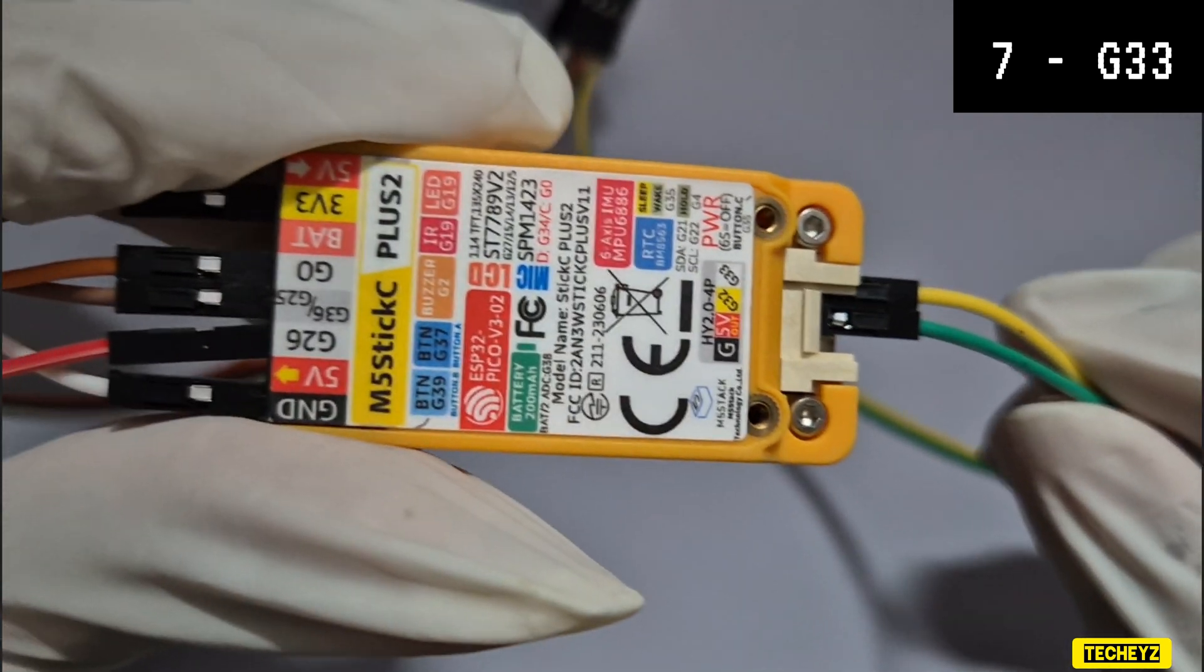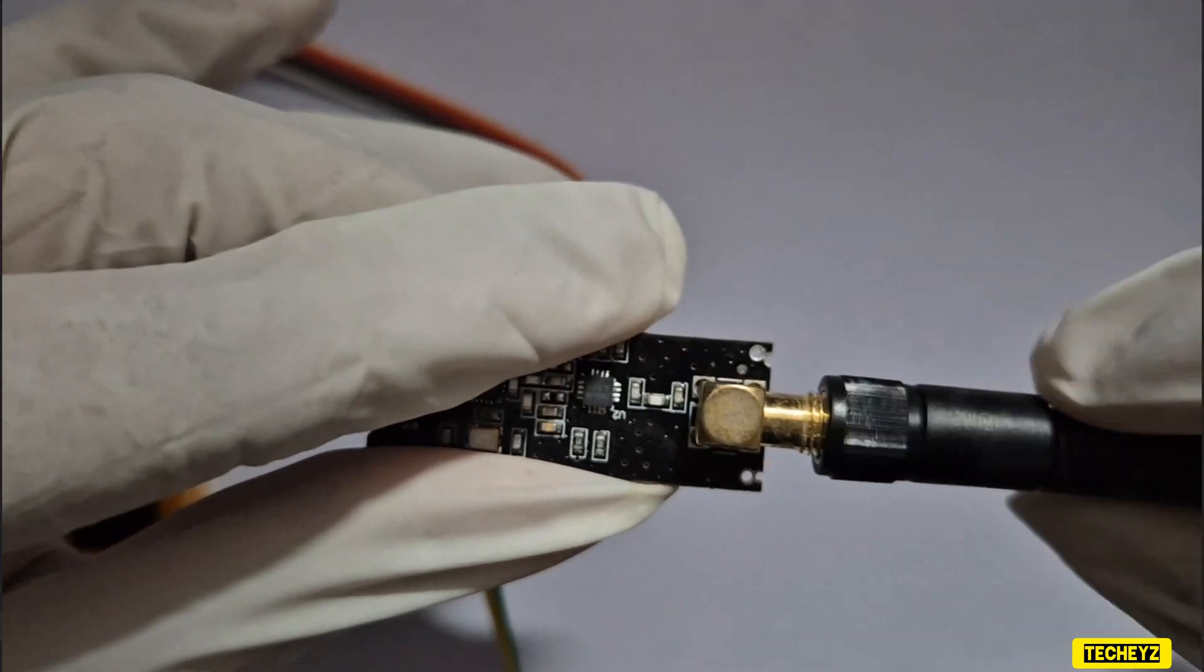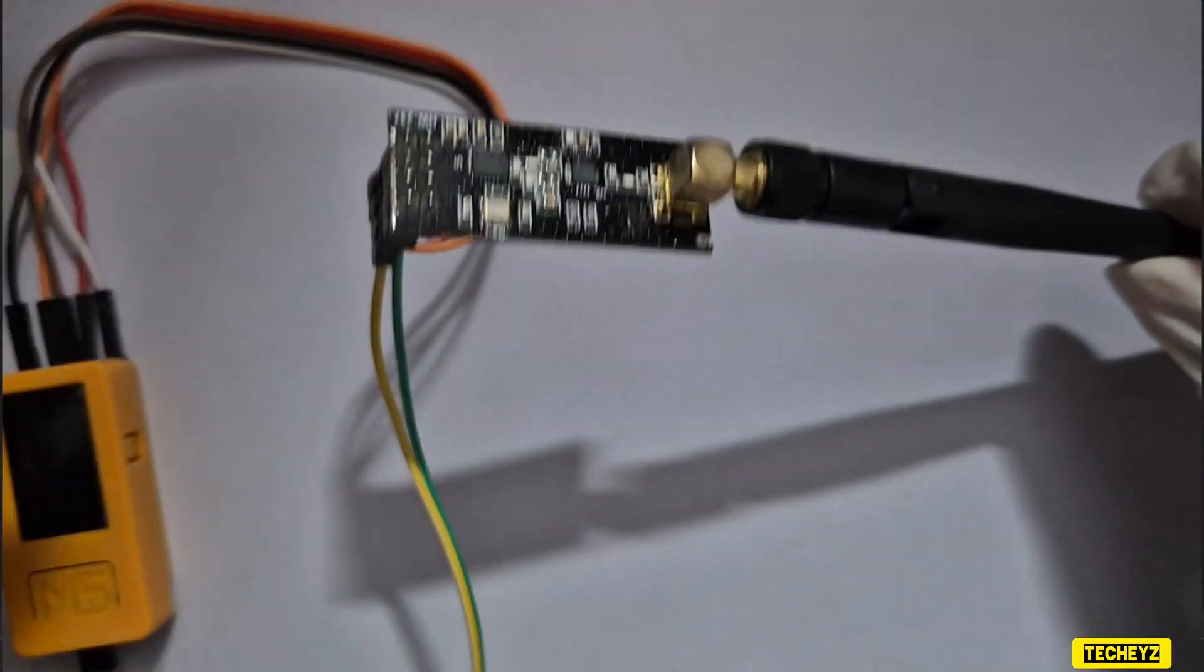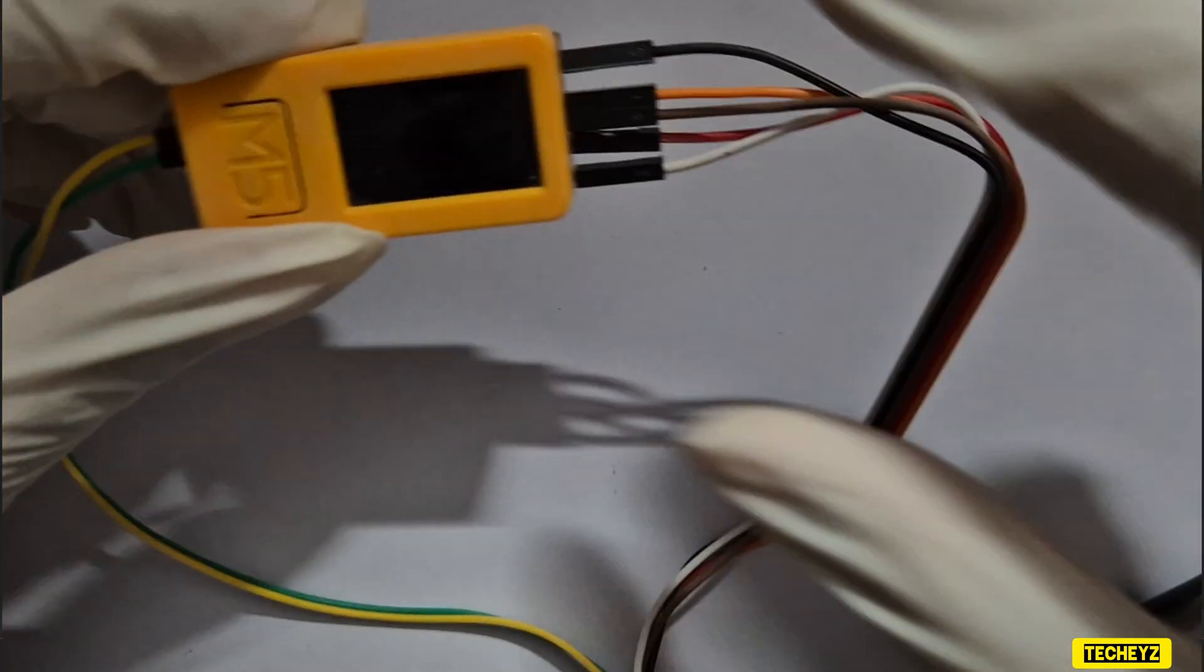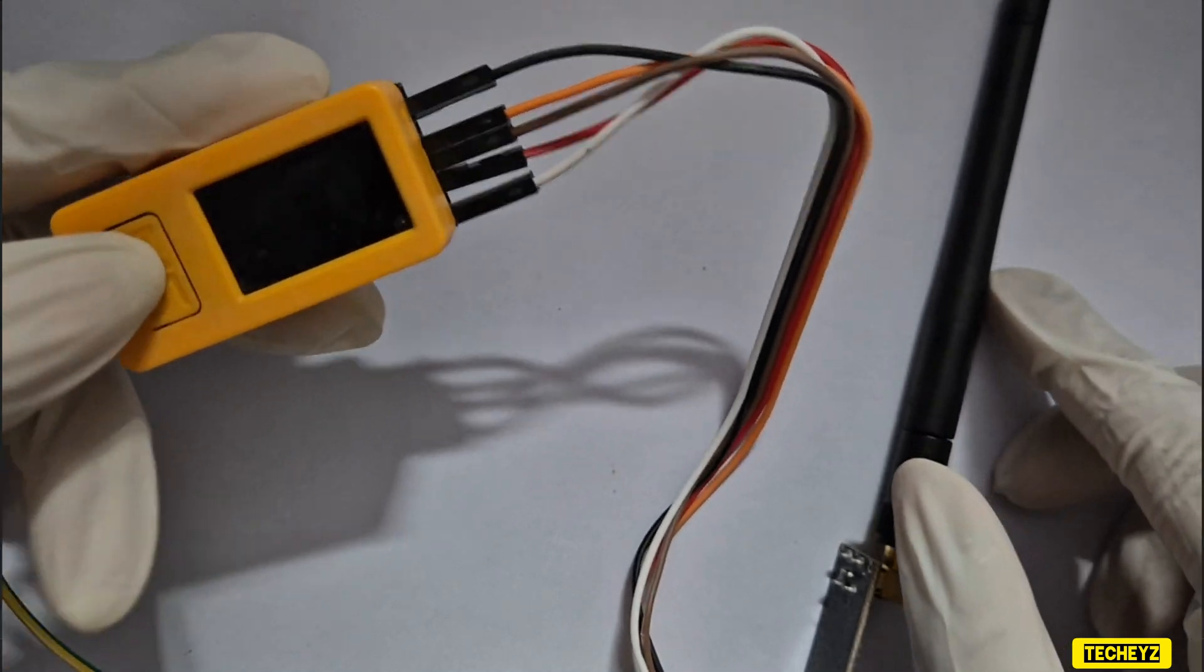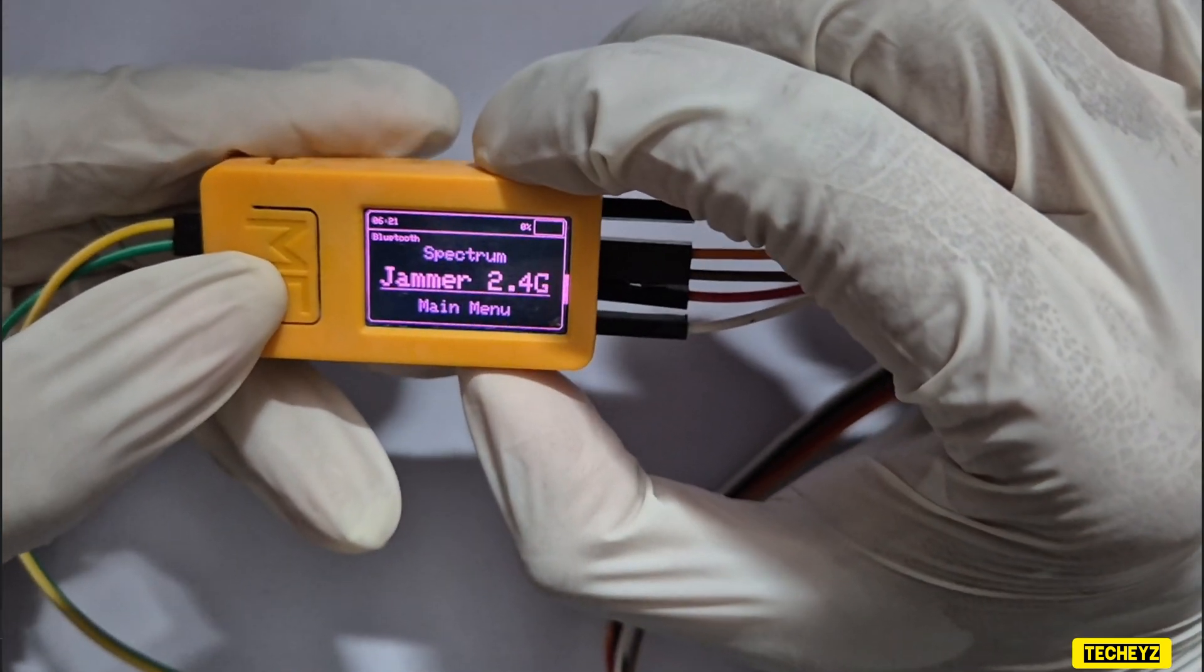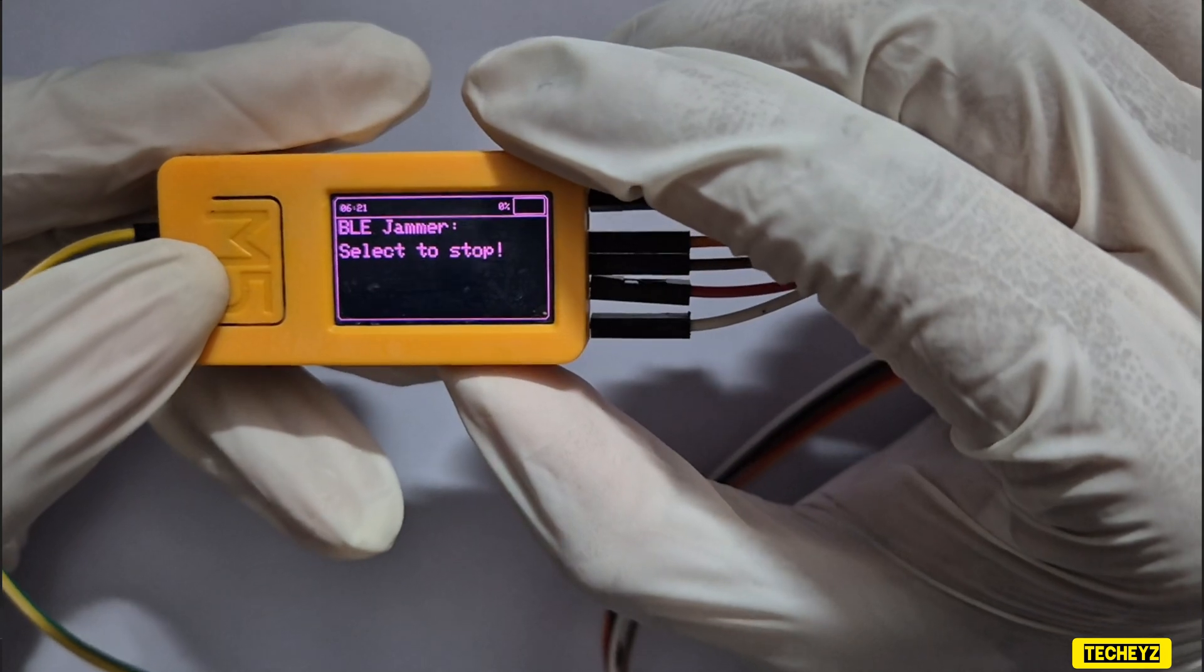So now that our setup is ready, what we are going to do is, I will just attach my antenna. Now our NRF setup is completed, so I will just click my NRF module and as you can see, our jammer is active.